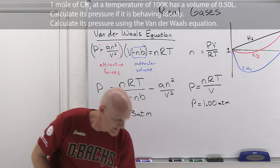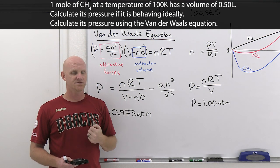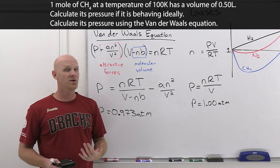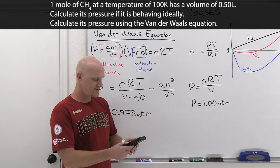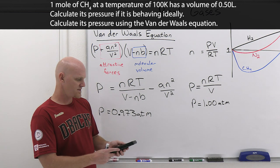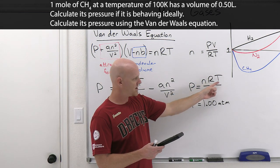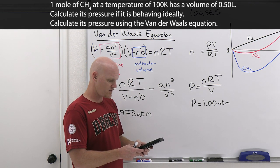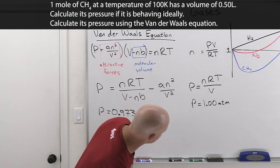We got now one mole of CH4 at a temperature of 100 Kelvin still, but now at a volume of 0.5 liters, instead of 8.2 liters. With that smaller volume, this is going to be at a much higher pressure. If we do the ideal gas calculation, we'll do one times 0.08206 times a temperature of a hundred, and instead of divided by 8.2, it's going to be divided by 0.5. We're going to get a pressure of 16.4 atmospheres.